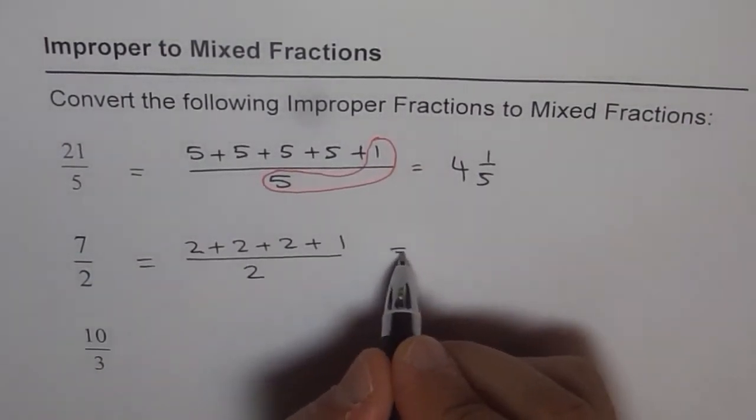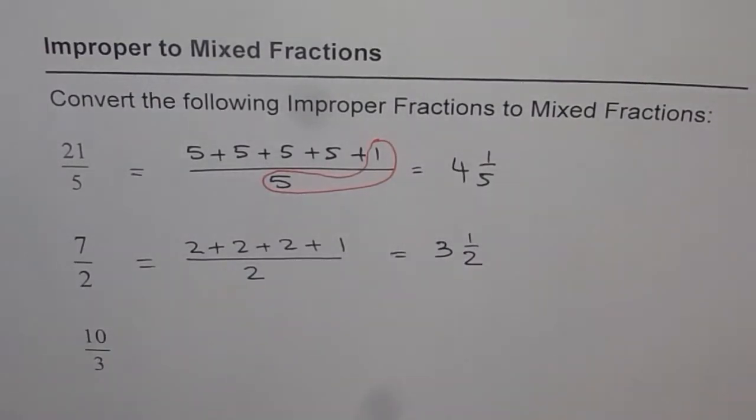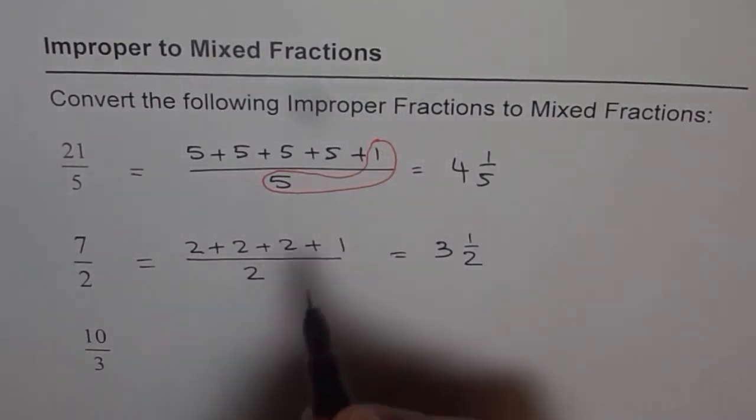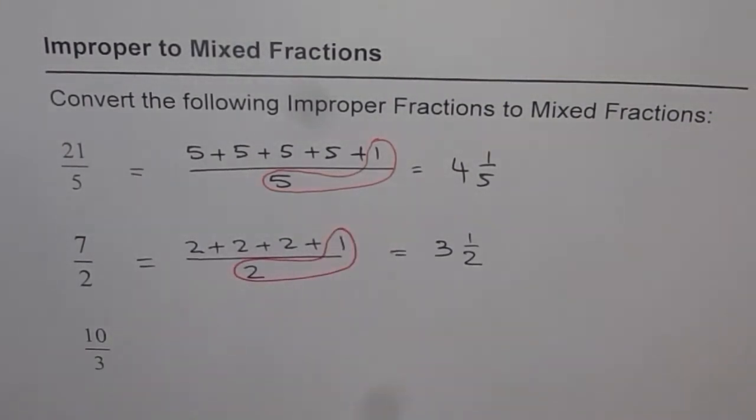How many 2's? 1, 2, 3. So let's write equals to 3. And you are left with just half. That's what it is. You are again left with 1 over 2. That's our fraction. Good job.